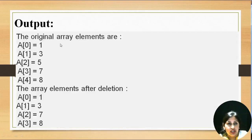So initially the original array is 1, 3, 5, 7, 8. But after deletion of 7 we have 1, 3, 5, 8.